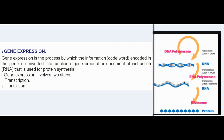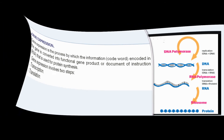Gene expression is the process by which the information encoded in a gene is converted into a functional gene product. Gene expression involves two steps: transcription and translation. Transcription means copying — it indicates the copying of genetic code from DNA to RNA. Proteins are synthesized in ribosomes present in the cytoplasm, but the synthesis depends on information encoded in the genes of DNA present in the nucleus.